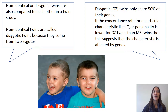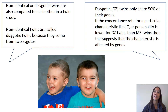Non-identical or dizygotic twins are also compared to each other in a twin study. Non-identical twins are called dizygotic twins because they come from two zygotes or two separate fertilised eggs. Dizygotic twins only share 50% of their genes. If the concordance rate for a particular characteristic like IQ or personality is lower for dizygotic twins than monozygotic twins, then this suggests that the characteristic is affected by our genes.